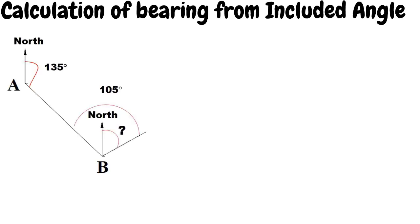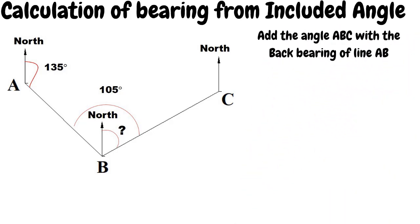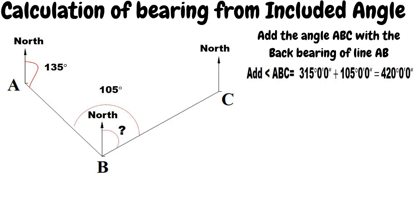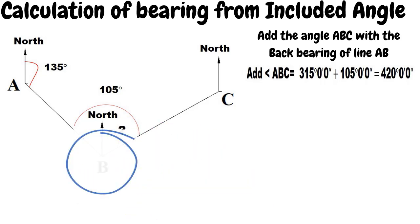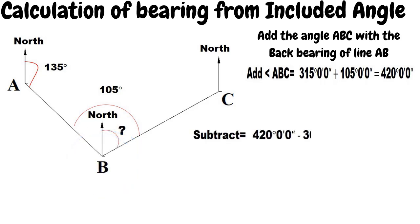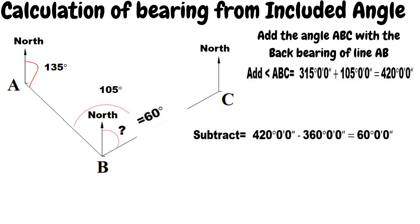Now add the angle ABC — 105 degrees — to the back bearing of line AB, which is 315 degrees, 0 minutes, 0 seconds, plus 105 degrees, 0 minutes, 0 seconds. By adding these two angles we get 420 degrees, 0 minutes, and 0 seconds. Subtracting 360 from 420 gives us the forebearing of line BC, which is 60 degrees. We have found the bearing of the next line from the included angle.